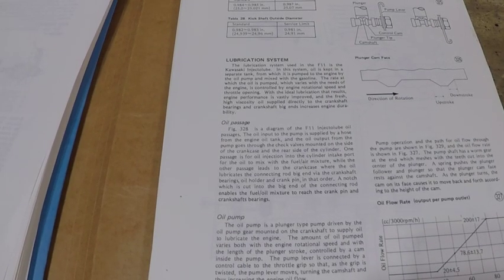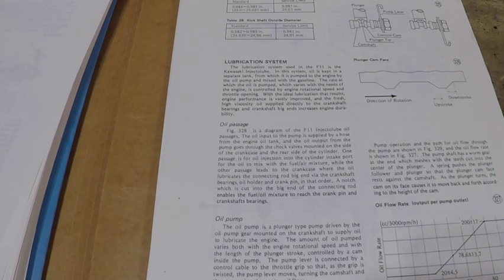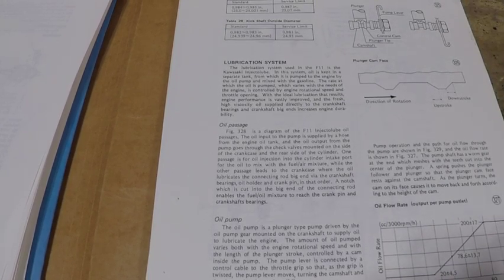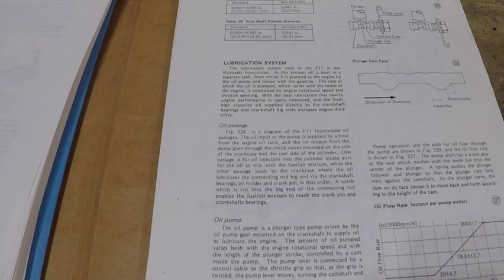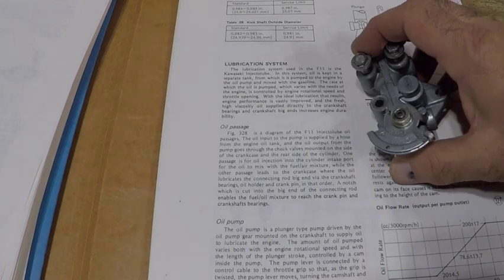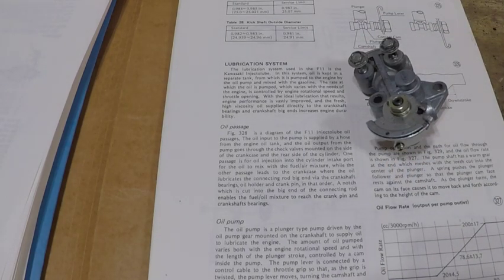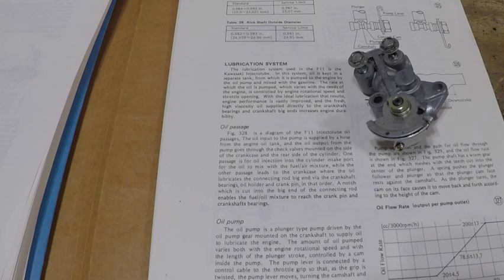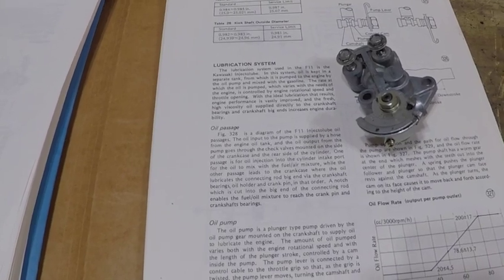Okay kids, welcome back to the shop. We're going to go over the Kawasaki F11 250 problem. What was happening was the bike was hydro locking. There was oil in the exhaust.